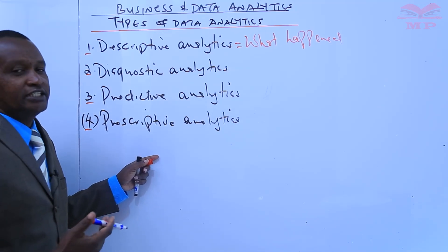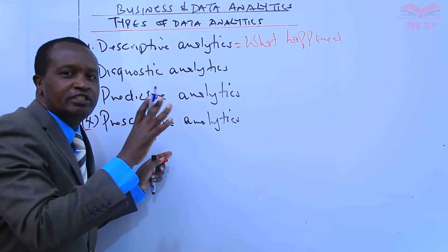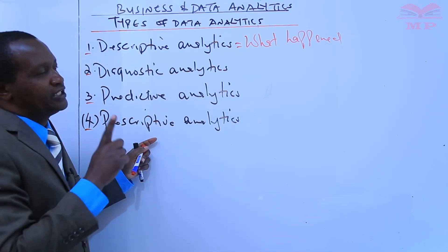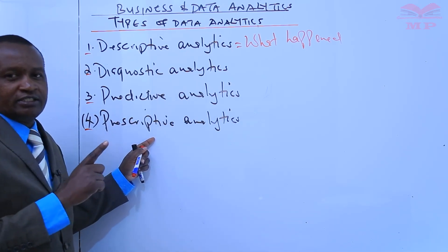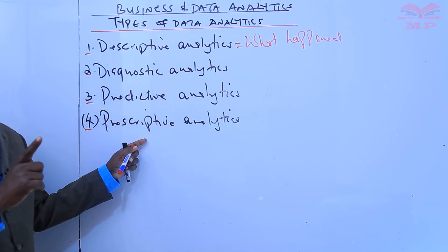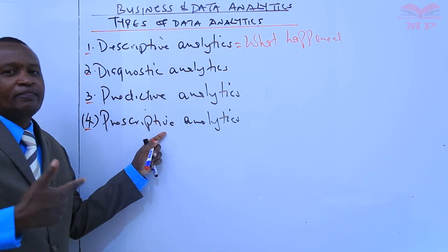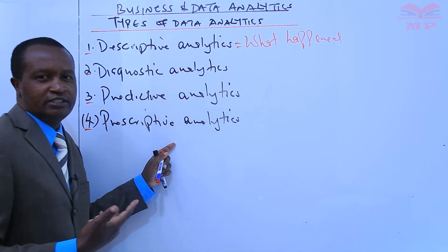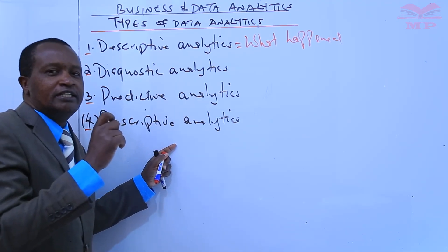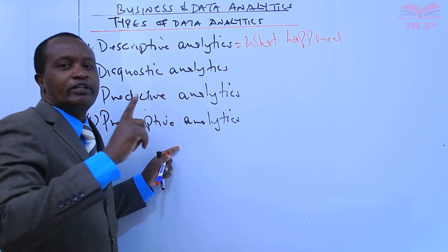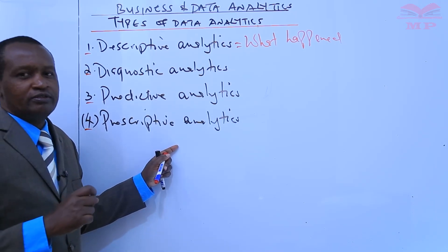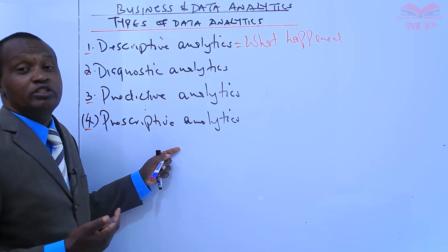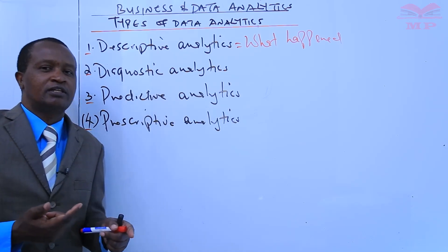The techniques here summarize large data sets to describe outcomes to the stakeholders, and by developing key performance indicators the strategies can help track successes or failures. We may also have specialized metrics that help to track successes or failures in an industry, such as return on investment, which is used in many industries.